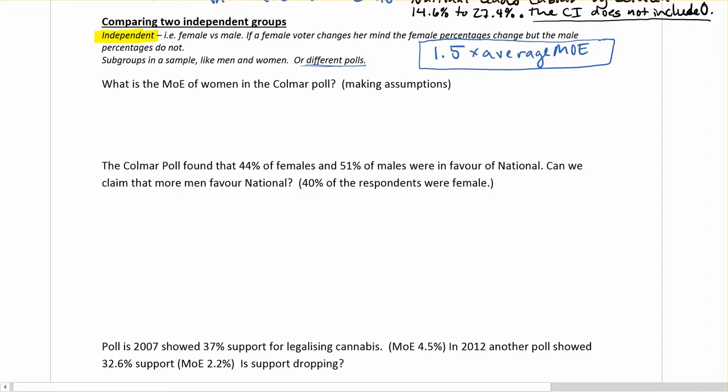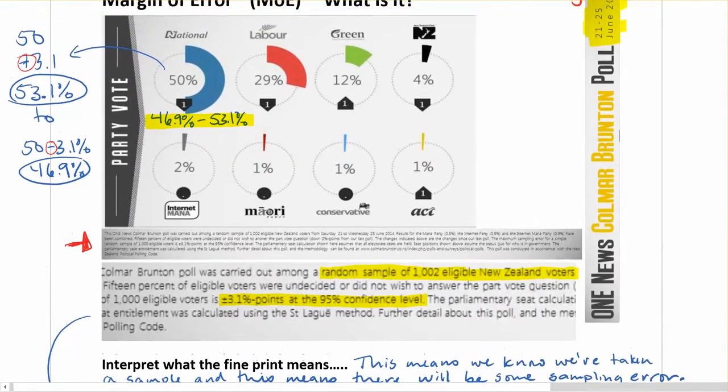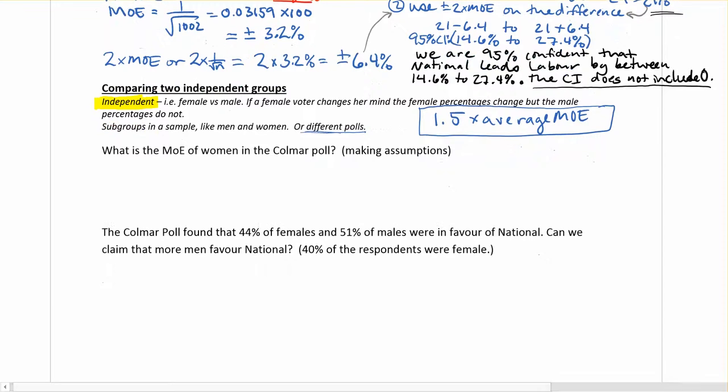There's a few assumptions that we need to be aware of that sometimes come into play. If I asked you, what's the margin of error for women in the Colmar poll we've been looking at? Well, if we go back to that poll, there's really no information in there about women at all. So if we had to make an assumption, or if we had to make a call on this, we would assume a 50-50 split if no information is given. So if we don't know otherwise, we can just assume that it's half men, half women.